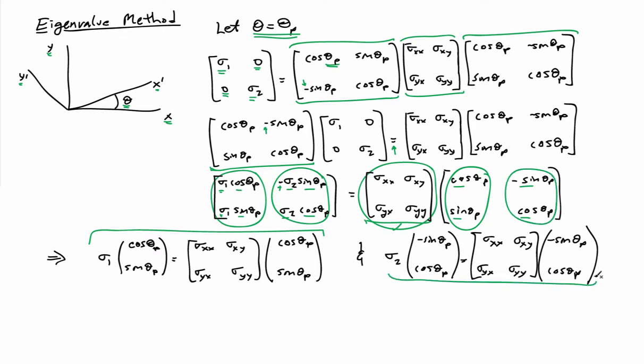And if we look at these relationships, we can now identify the eigenvector, eigenvalue relationship here of this system. Sigma 1, sigma 2 are simply the eigenvalues.